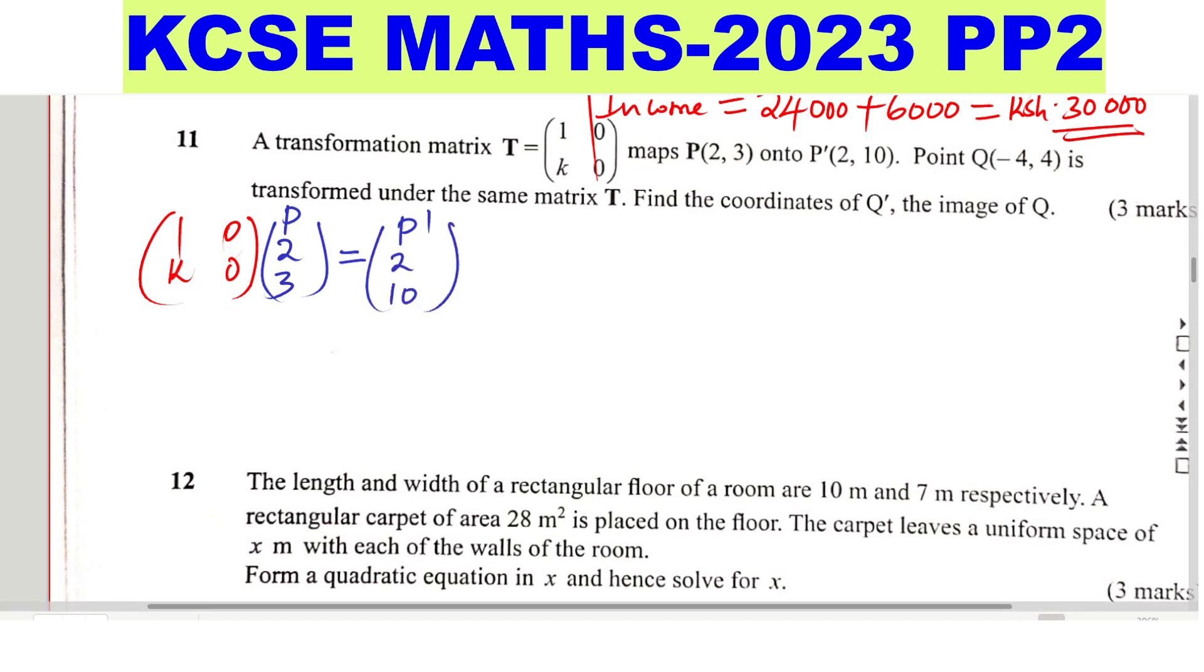By doing this, we'll be able to get K. So we multiply this, apply this out, row 1, column 1, so 1 times 2, you get 2, then 0 times 3 is 0, then row 2, column 1, so K times 2, you get 2K plus 0.